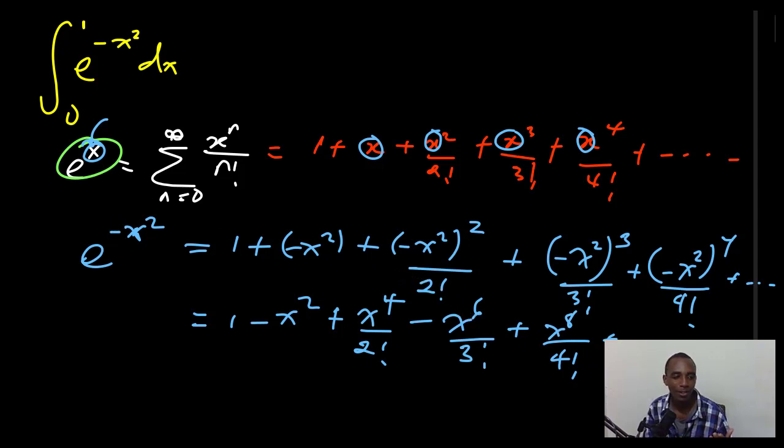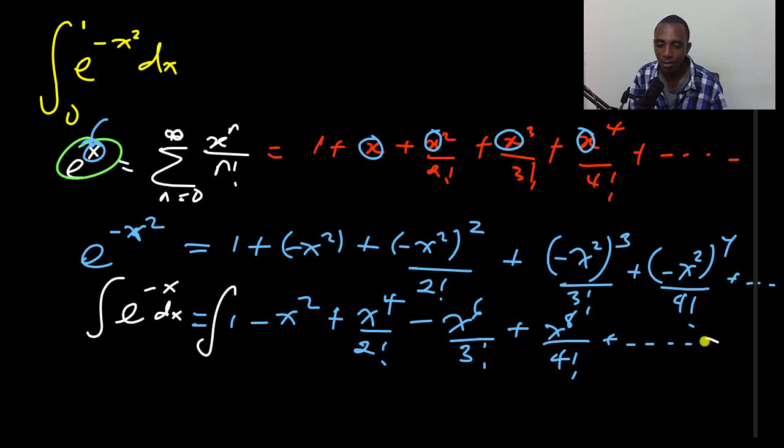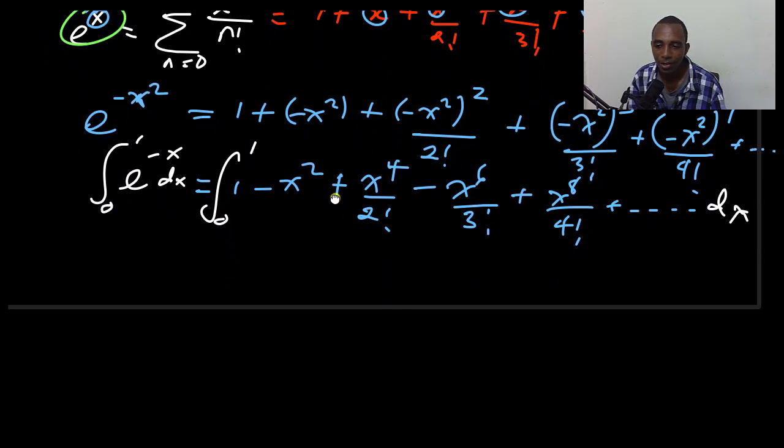So instead of integrating this function here, exponent of negative x squared, instead of integrating this here, I'm simply going to integrate this and try to find an approximation to this integral, of course, from 0 to 1. All right. So let's go ahead and do that.